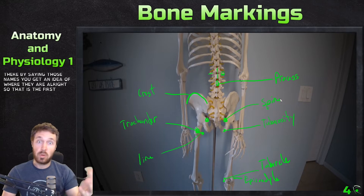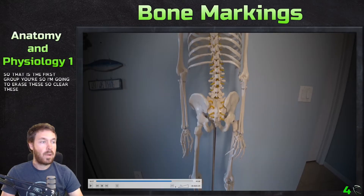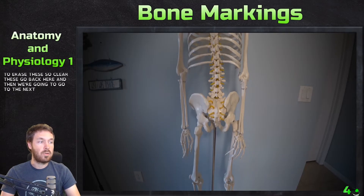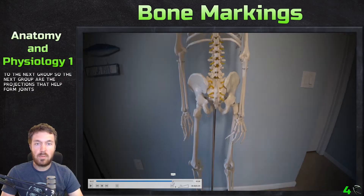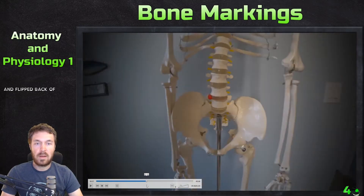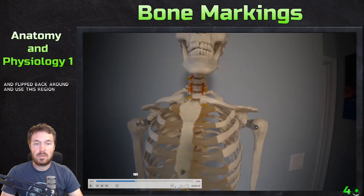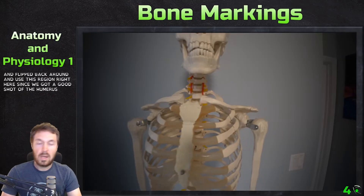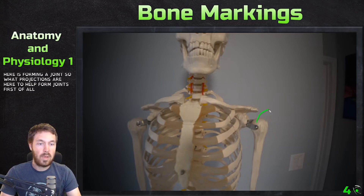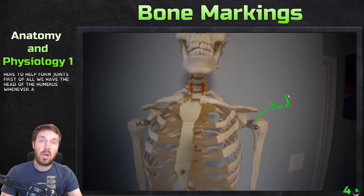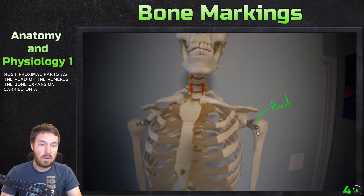That is the first group. The next group are the projections that help form joints. Moving up here, we get a good shot of the humerus forming a joint. The first marking is the head of the humerus — whenever a bone has a head, that's the uppermost proximal part. The head is the bony expansion carried on a narrow neck, so this would be the neck of the humerus.